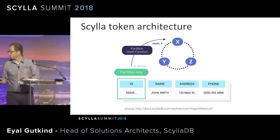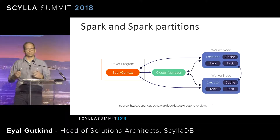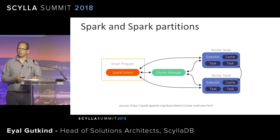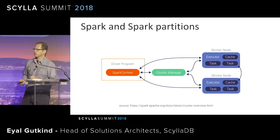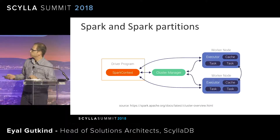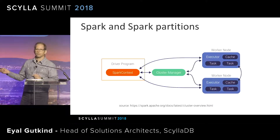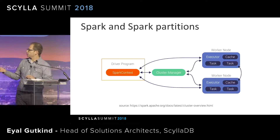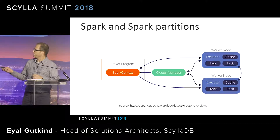Why is it relevant to us? It's relevant because we shard the data in a manner that is different than Spark does. There are differences between the hashing functions between Scylla and Spark, and the main difference is how Spark consumes data out of Scylla. Spark is a distributed system that has a driver program — your main function — which will take your function and distribute it across multiple executors. Each executor will have different tasks, and caching and memory settings that are part of this cluster. The memory is organized in what's called a Resilient Distributed Dataset, and those RDDs are stored in each one of those nodes.